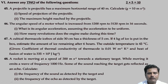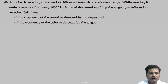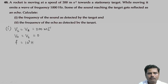Next problem: A rocket is moving at 200 meters per second toward a stationary target while emitting a wave of frequency 1000 Hertz. Some of the sound reaching the target gets reflected as an echo. In case 1, the rocket acts as the source. Velocity of source equals 200 meters per second; velocity of observer (target) equals zero; frequency of wave equals 1000 Hertz. We need to find frequency detected by the target.